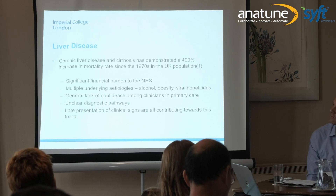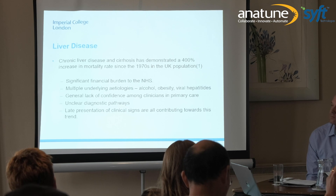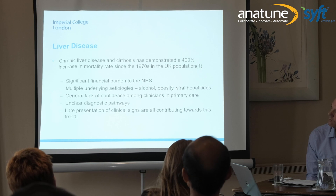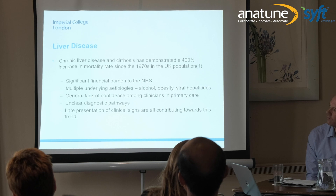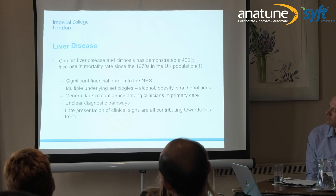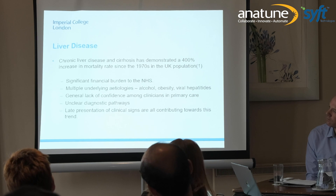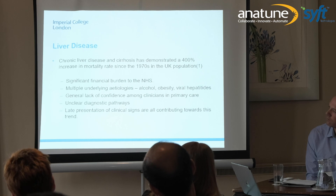There's been a 400% increase in mortality related to liver disease in the UK population since the 1970s — a massive burden to the NHS. Lots of reasons for it: alcohol consumption, increasing fatty liver disease, so with the rise in obesity you get fat infiltration into the liver causing fibrosis and cirrhosis, and also viral hepatitis. It can be quite difficult to diagnose, especially in primary care, with unclear diagnostic pathways and often presenting very late.